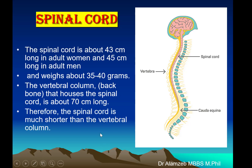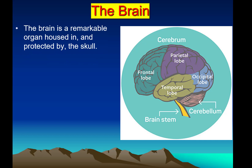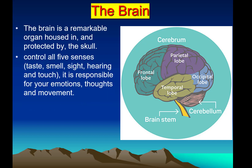The brain is a remarkable organ housed in and protected by the skull. We will discuss it further and you will see how complicated the functions the brain performs are. The brain controls all five senses: taste, smell, sight, hearing, and touch. It is responsible for emotion, thought, and movement.